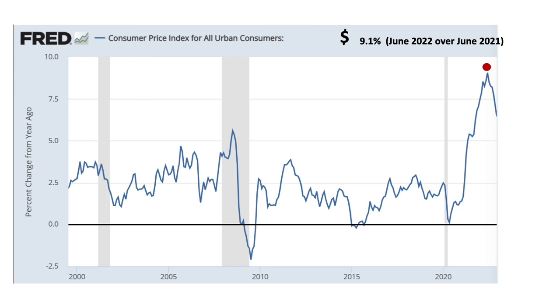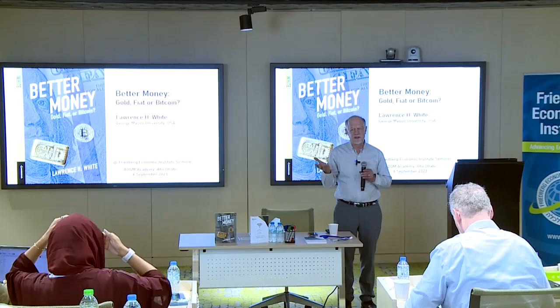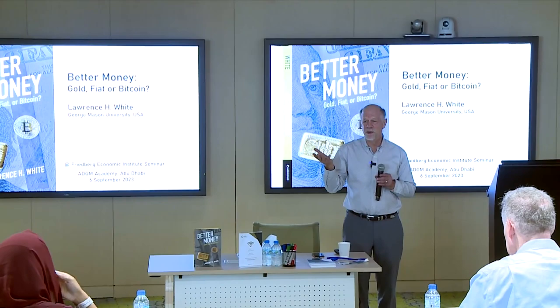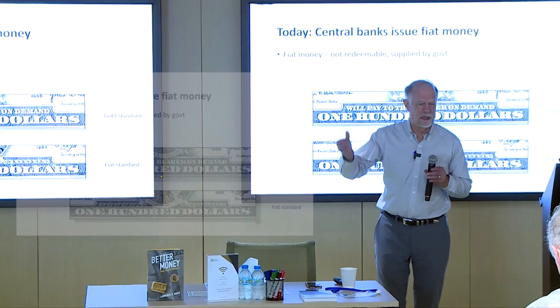I'm going to talk about money, but compared to Tyler's talk it's going to be much more thematic and sweeping. The basic idea is to compare different monetary standards that, at some level, as a society we have to choose among. Our current status quo is technically known as a fiat standard.